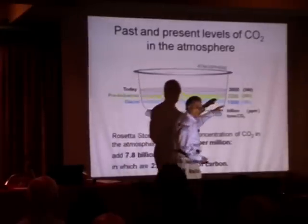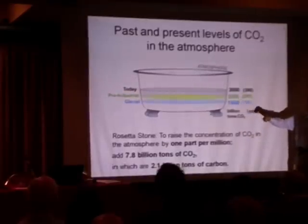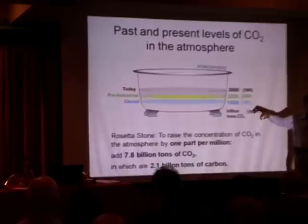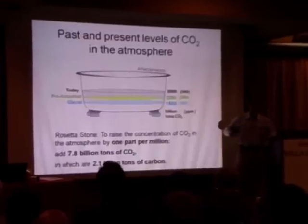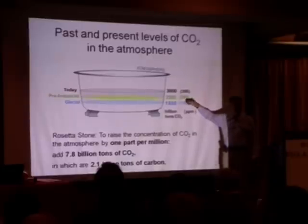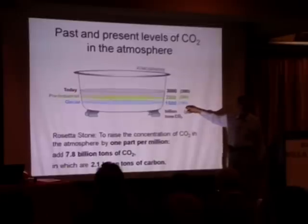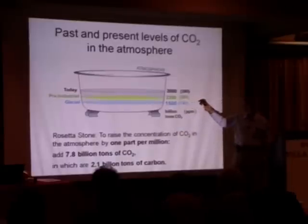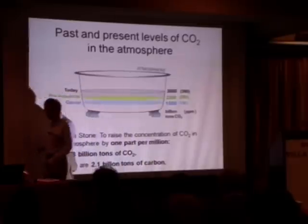There are three different units for talking about CO2 in the atmosphere. Billion tons is not common — you probably don't know the number 3,000 billion tons. More common is parts per million: right now 390 molecules out of every million in this room's air are CO2. 200 years ago it was 280 ppm, and 20,000 years ago it was 190 ppm. The conversion is approximately 7.8 billion tons of CO2 per part per million.